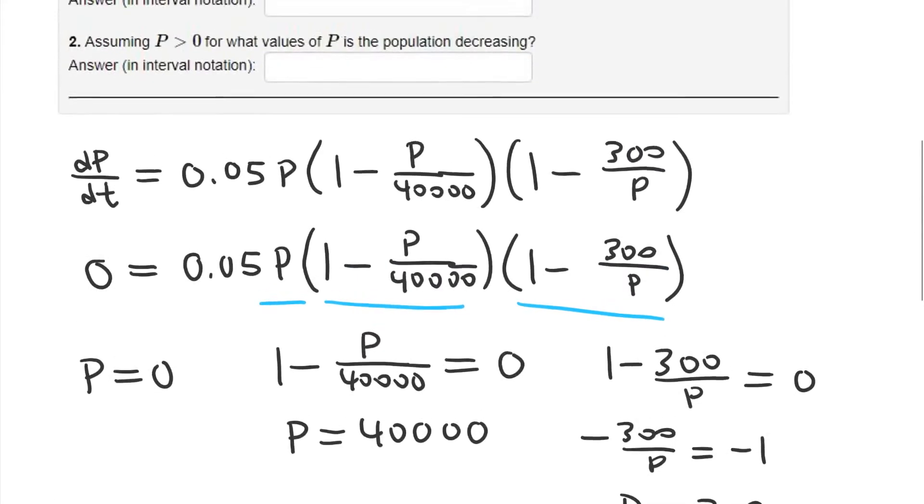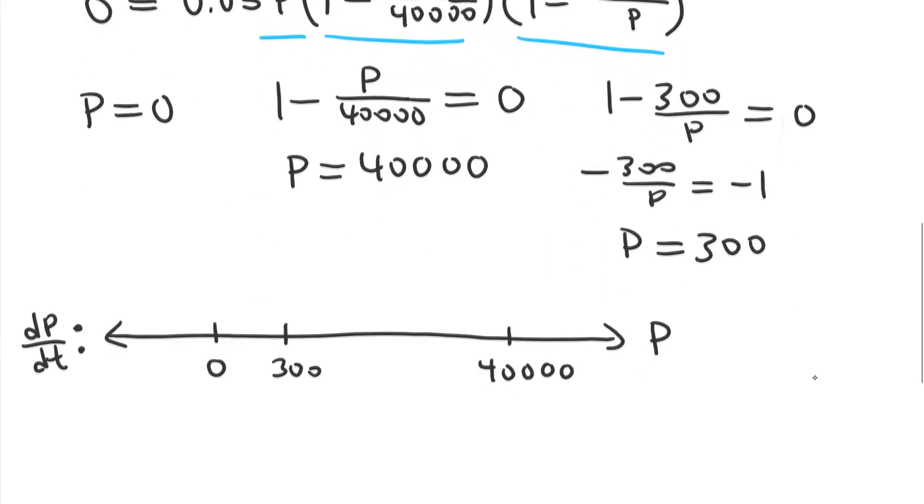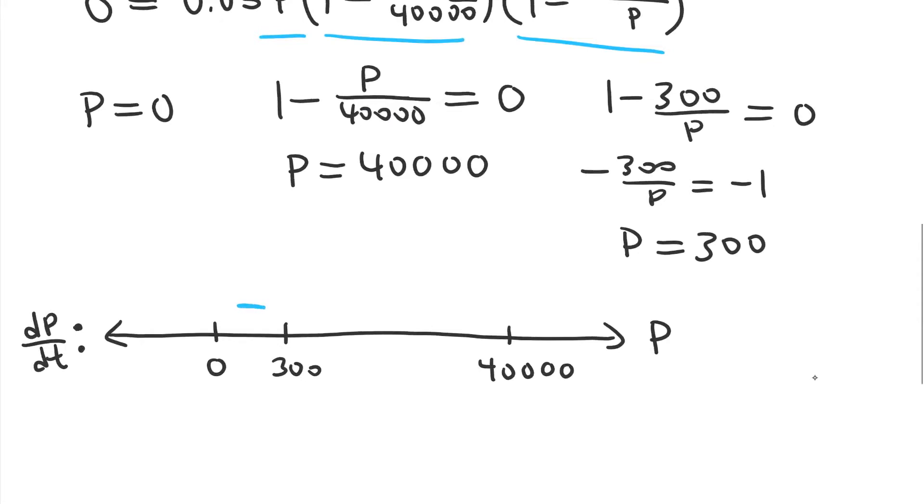So between 0 and 300, if you just go back to your original equation here, plug in a value between 0 and 300, you're going to notice that this is positive. This part is going to be positive as well. And notice that 300 divided by P, if P is less than 300, that's going to be a number greater than 1, so this factor is going to be negative. We're going to have 1 minus a number that's bigger than 1. And so, it's going to be negative in this interval.